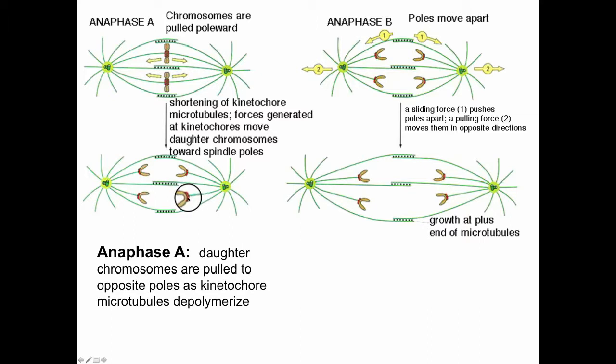Once they hit that target kinetochore, they get stabilized. The chromosomes move to the opposite poles as the spindles depolymerize at the kinetochore. So they're getting shorter. As they get shorter, the chromosome moves towards the spindle pole.